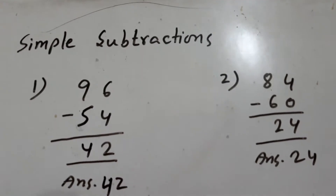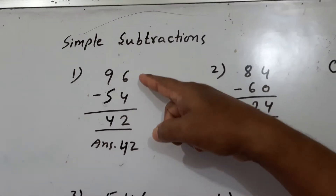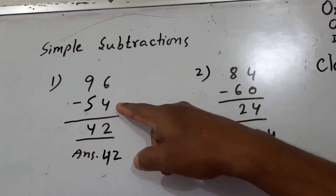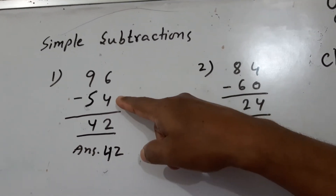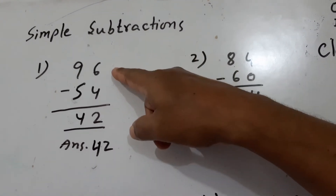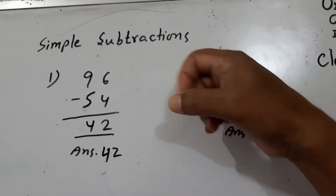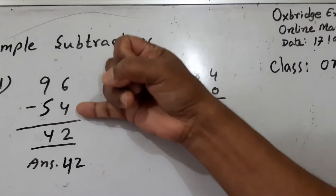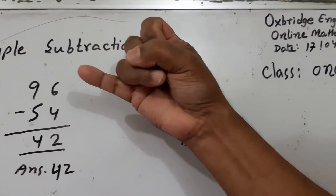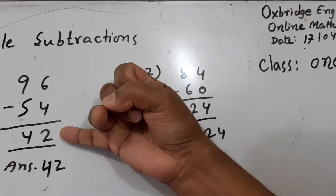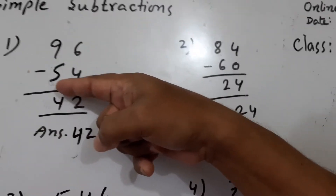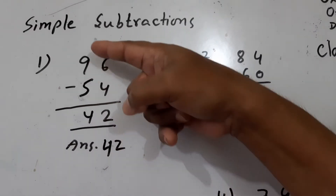Do some simple subtraction. 96 minus 54. We have to subtract 4 from 6. We have to count after 4 up to 6: 4, 5, 6. That is 2. We can write now 2. This is 9 and this is 5. We have to read after 5 up to 9.